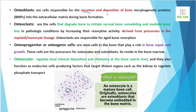Osteoblasts are responsible for the secretion and deposition of bone matrix. The deposition of matrix during bone formation is the key function. Osteoblasts are the cells that build bone and initiate normal bone formation. Osteoclasts, on the other hand, are mainly responsible for the degradation of bone — bone resorption.